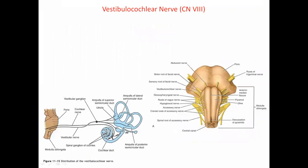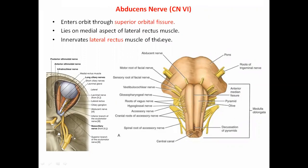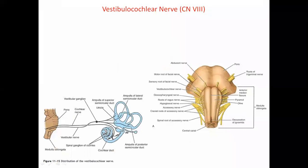The abducens nerve is a purely motor nerve. The vestibulocochlear nerve, the eighth cranial nerve, is purely sensory. It has two components: a vestibular component and a cochlear component.